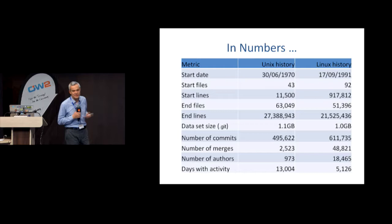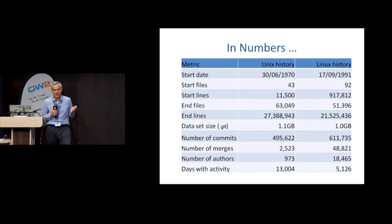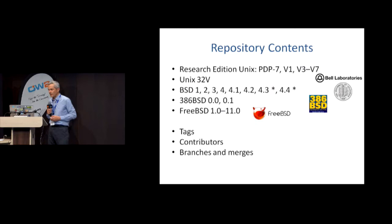Let me give you some numbers. The repository starts its life in June 1970 with just 43 files and 11,000 lines, and ends at 27 million lines with almost half a million commits. For comparison, the history of Linux in one repository has more merges and more authors, but there are quite more days of activity in the history of Unix.